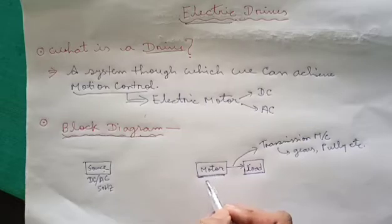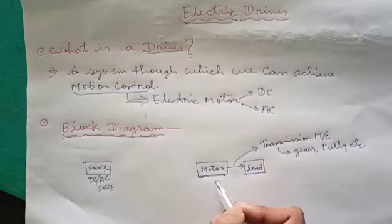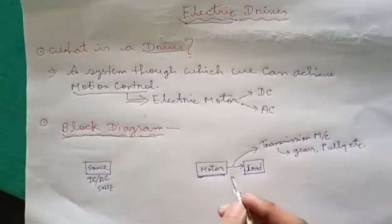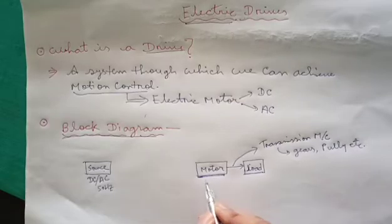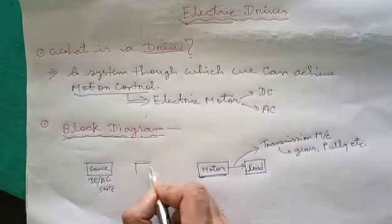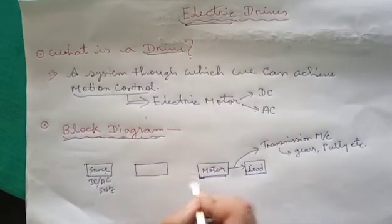Now we cannot give this source to the motor directly because we want to vary the speed of the motor or its torque or its characteristics according to our requirement. So what we will do, we will use a power modulator in between the source and the motor.